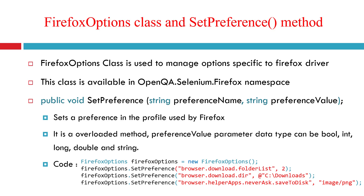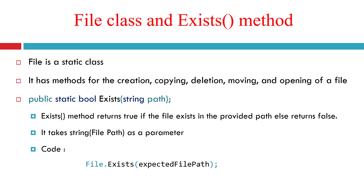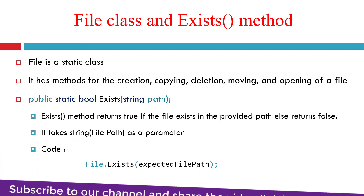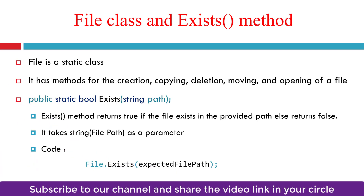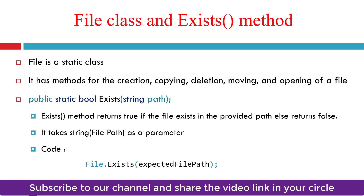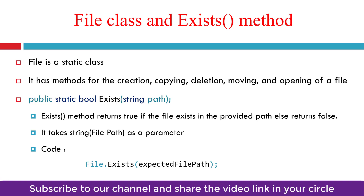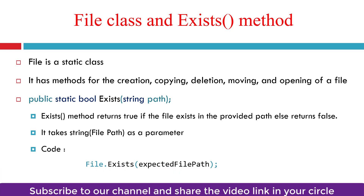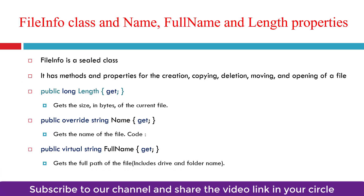We'll use two more .NET framework classes: File and FileInfo. The File class is a static class with methods for creating, copying, deleting, moving, and opening files. The particular method we're interested in today is Exists, which returns a boolean value when we pass the file path string. If the file is downloaded to the given path it returns true; if not available it returns false.